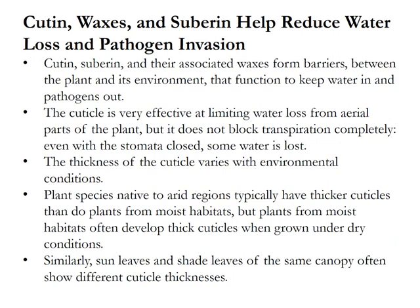Cutin, waxes, and suberin help reduce water loss and pathogen invasion. They form barriers between the plant and its environment, keeping water in and pathogens out. The cuticle is very effective in limiting water loss from aerial parts, though it does not block transpiration completely — even with stomata closed, some water is lost. The thickness of the cuticle varies with environmental conditions; plants native to arid regions typically have thicker cuticles than those from moist habitats, but plants from moist habitats often develop thicker cuticles when grown under dry conditions. Similarly, sun leaves and shade leaves of the same canopy often show different cuticle thicknesses.